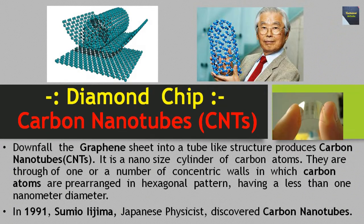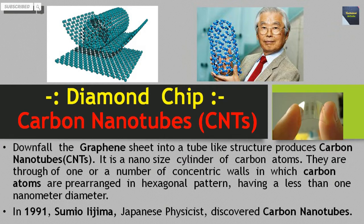Now we talk about some information about carbon nanotubes. Rolling a graphene sheet into a tube-like structure produces carbon nanotubes. It is a nano-size cylinder of carbon atoms. They are made of one or a number of concentric walls in which carbon atoms are pre-arranged in a hexagonal pattern, having a diameter of less than one nanometer. In 1991, Sumio Iijima, a Japanese physicist, discovered carbon nanotubes.